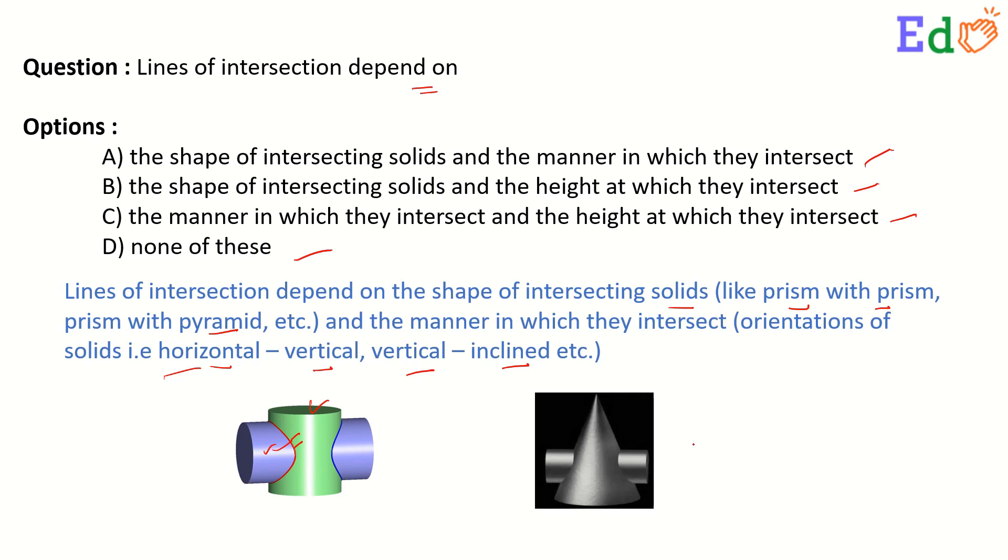Again, if we watch the second figure, there is a cone with a cylinder. Here for different shapes, we get this type of curve of intersection, and the alignment—cone for vertical and cylinder for horizontal.